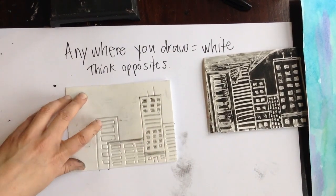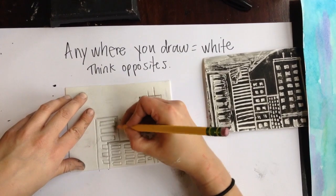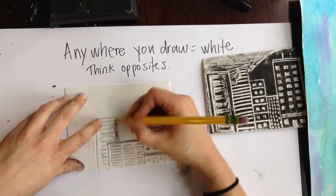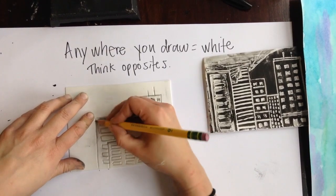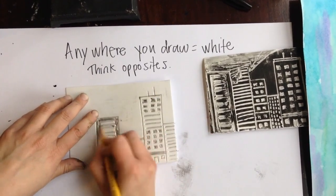So if I want this building to be mostly white, I'm going to fill this in. Because I want the windows to be just black. So I'm drawing in where I want it white. The opposite of what you kind of want to do.